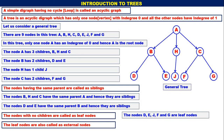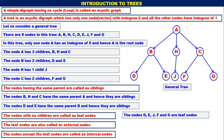The leaf nodes are also called external nodes. The nodes except the leaf nodes are called internal nodes. In the general tree, the nodes A, B, H, and C are internal nodes.